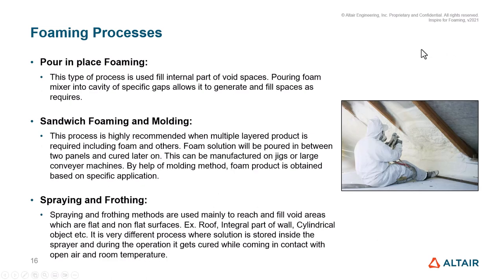There are several other kinds of foaming processes, such as pour-in-place foaming, which is especially used to fill internal gaps and voids. For sandwich foaming and molding, it is recommended when you would like to have multi-layer foam one above the other. Spraying and frothing are mainly used to reach and fill void areas which are flat or non-flat, such as the roof, walls, and cylindrical objects, and is mainly cured in contact with open air at room temperature.